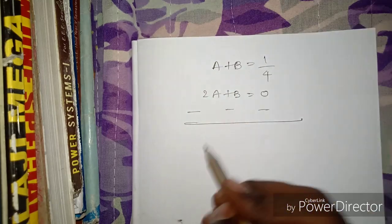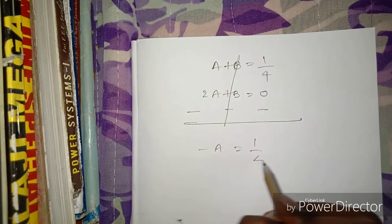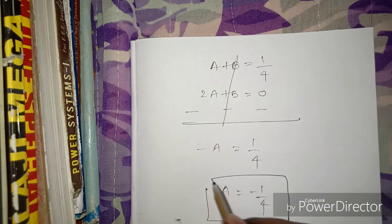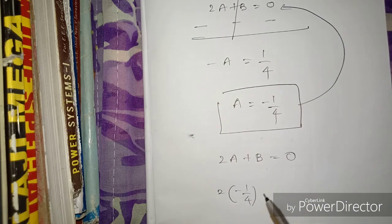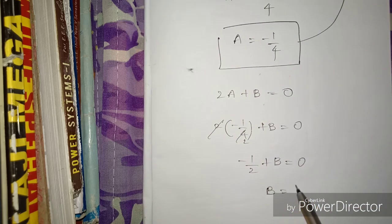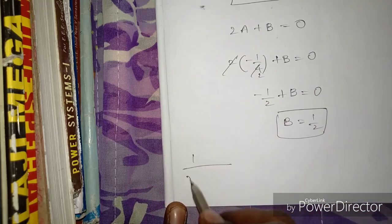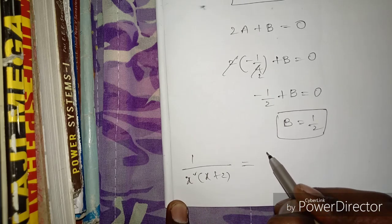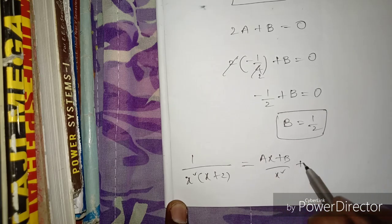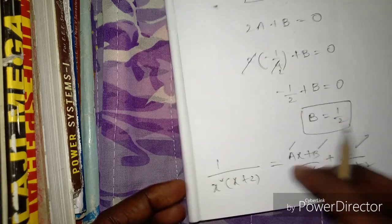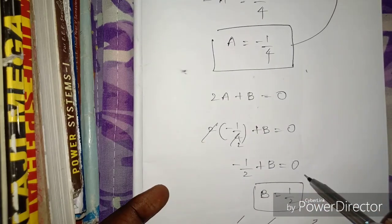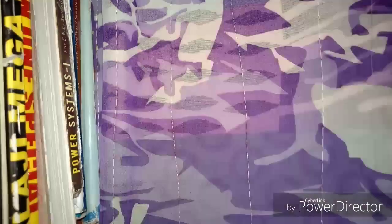Now we solve the system: A + B = 1/4 and 2A + B = 0. Subtracting the first from the second: A = -1/4. Substituting back into 2A + B = 0: 2(-1/4) + B = 0, so -1/2 + B = 0, giving B = 1/2. So A = -1/4, B = 1/2, and C = 1/4.